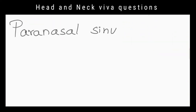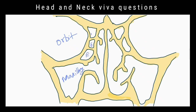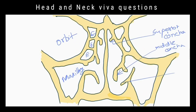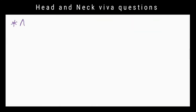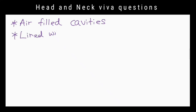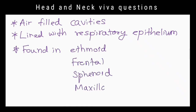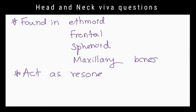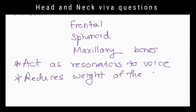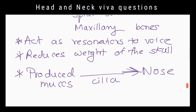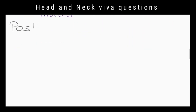What do you know about paranasal sinuses? They are air-filled cavities lined with respiratory epithelium found in the interior of the ethmoid, frontal, sphenoid and maxillary bones, which reduce the weight of the skull and act as resonators to the voice. The mucus produced in them is moved to the nose by the action of cilia.